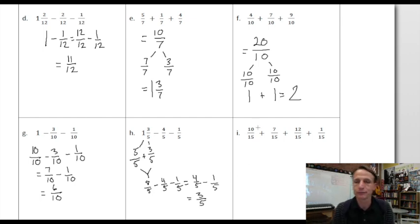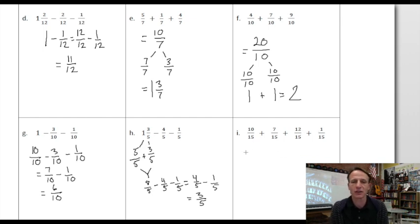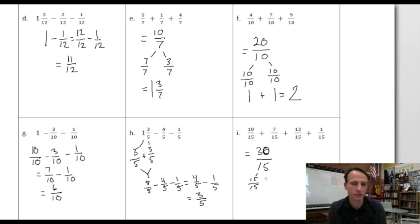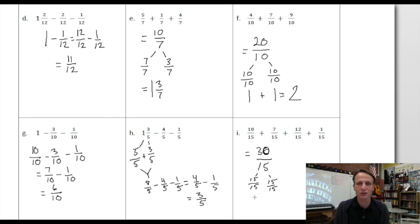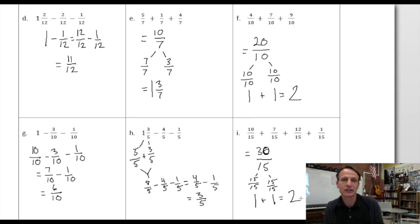These are all fifteenths and we're adding, so it's pretty straightforward. Ten and seven make seventeen, twelve more: seventeen plus ten is twenty-seven, two more twenty-nine, one more makes thirty. So we have thirty fifteenths. Using number bonds: bust out one whole of fifteen fifteenths — how many fifteenths does that leave? Another fifteen fifteenths. So that's one whole and one whole: one plus one is two!